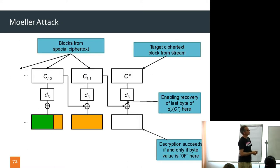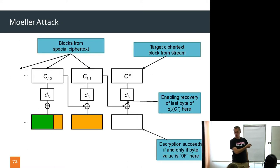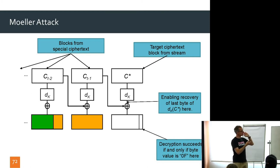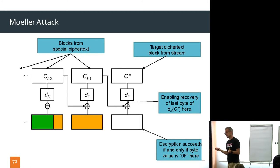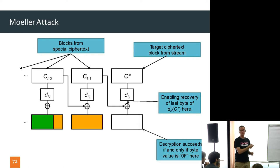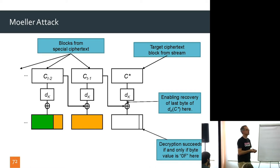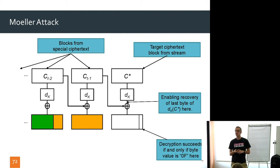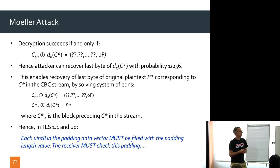In principle, I can repeat this attack. If it doesn't work the first time, I get another special ciphertext and try again. Except there's a problem: every time there's an error in TLS, the connection is terminated and all keys are thrown away, so you can never try the same C star twice. Still, this formally is an attack on TLS — a break.